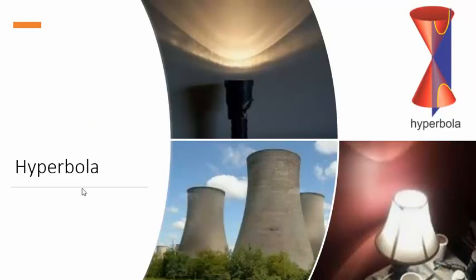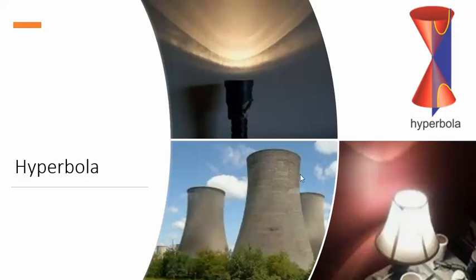The next conic section is called a hyperbola, which is probably the one you haven't heard of. A hyperbola is created when you intersect a plane perpendicular to the base of the cone. It's the only conic section that intersects both cones, giving it two separate curves. You can see this shape in a lamp, on the side of a nuclear reactor cooling tower, and in the shadow of a light.